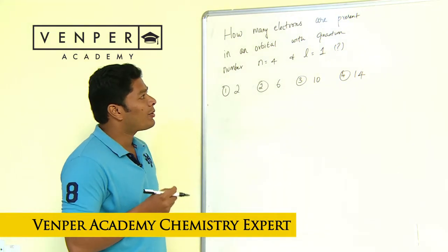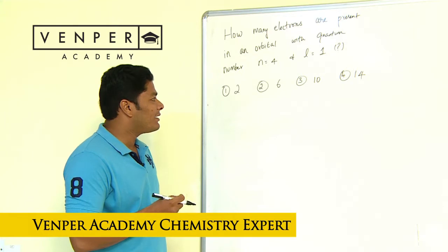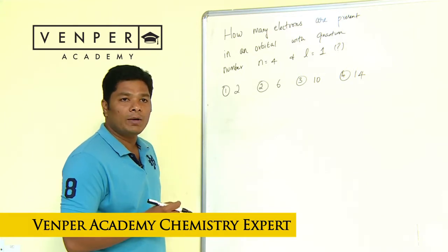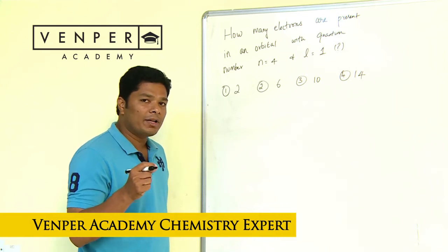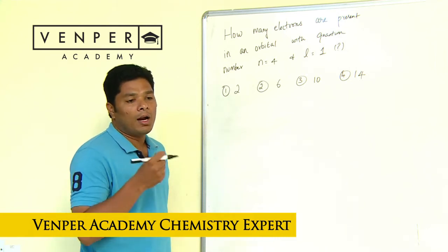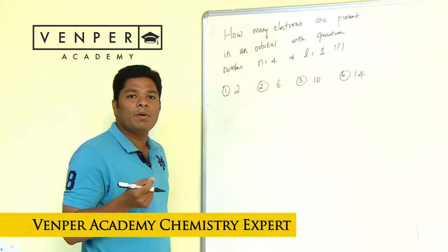For example, what I have here is: how many electrons are present in an orbital with quantum number n equals 4, l equals 1? Answers given are 2, 6, 10, and 14. Now let me take a minute to tell you, on average you need to solve chemistry in one hour and I would like my students to solve all 45 but a minimum of 35.